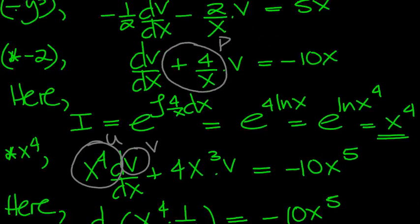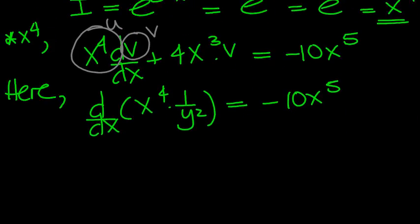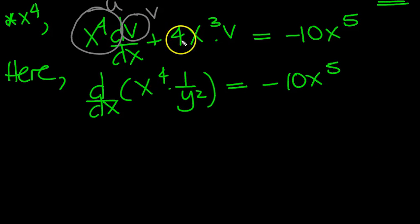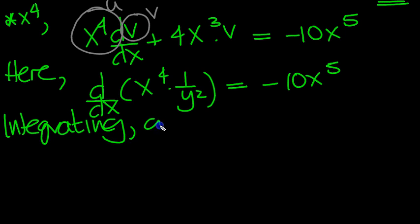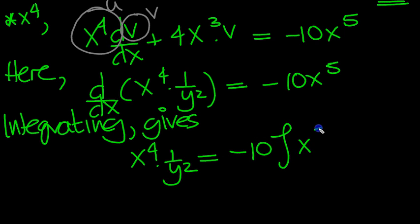Now I just want to check v was 1 over y squared, just to remind myself, yeah, there it is there. So that's OK. So we haven't made a mistake there. So we've got d by dx of u times v is equal to minus 10x to the 5. Integrating both sides then gives, so on the left, we just get what's inside the bracket, integral of the derivative. And then you integrate this. So it's minus 10 lots of the integral of x to the 5 dx, which equals minus 10x to the 6 over 6, plus a constant of integration.